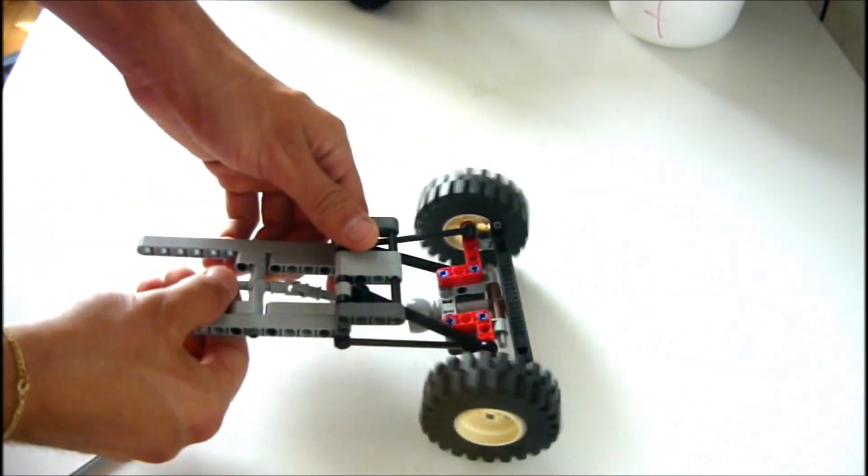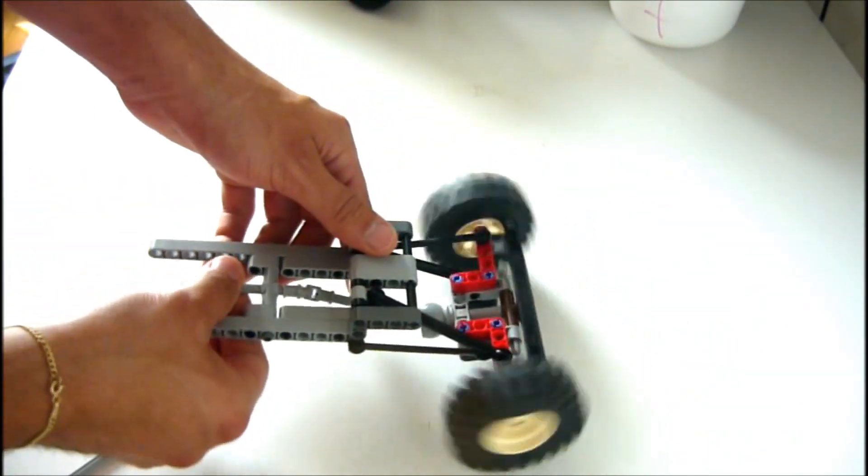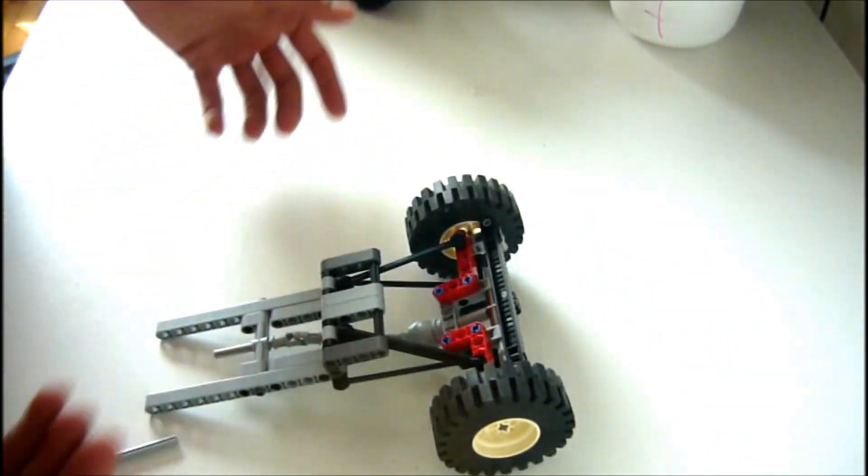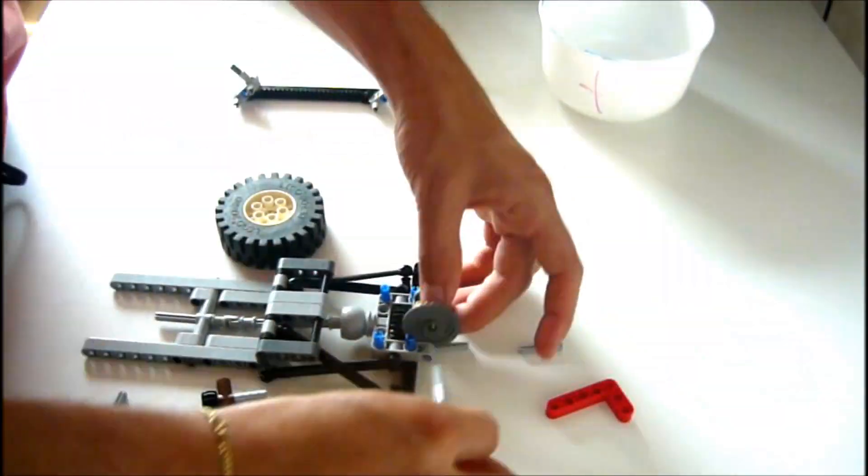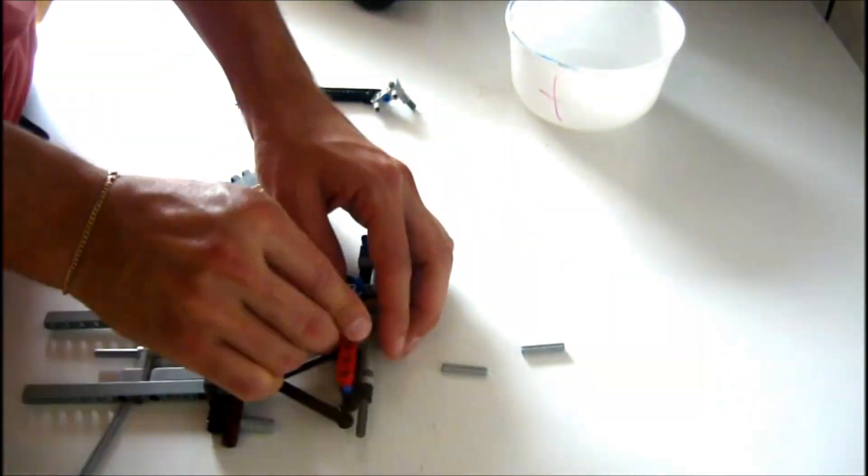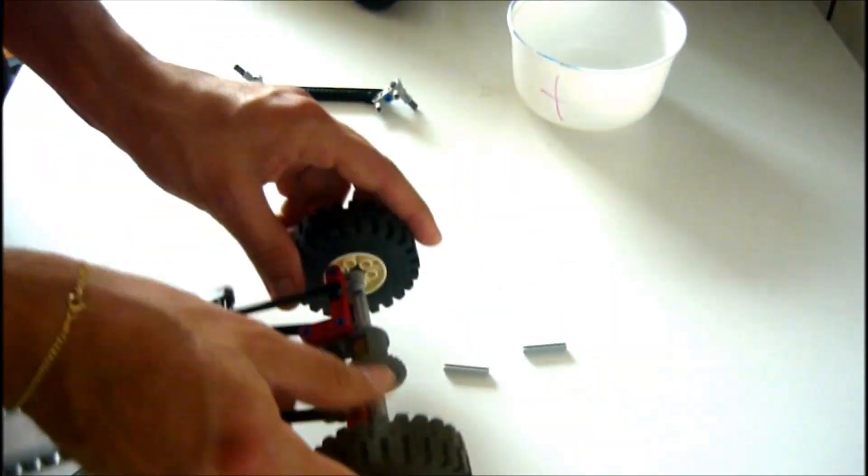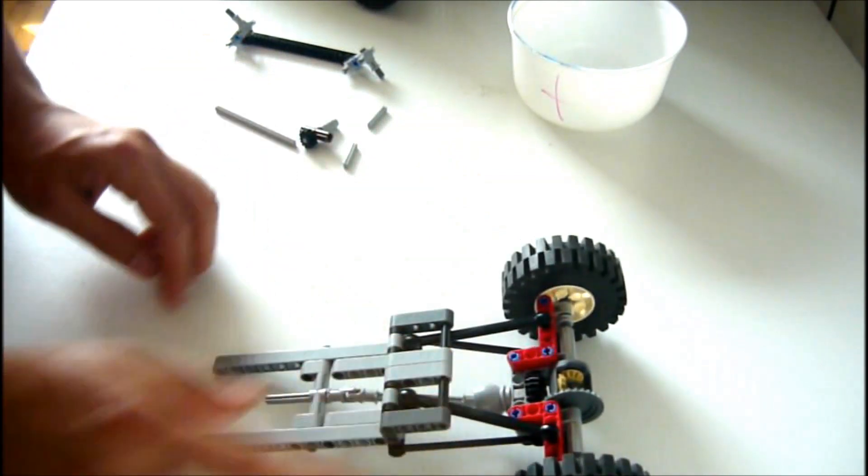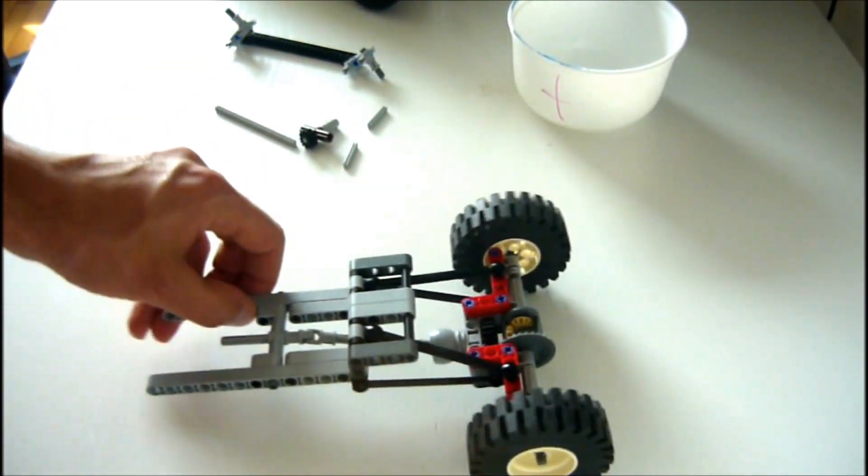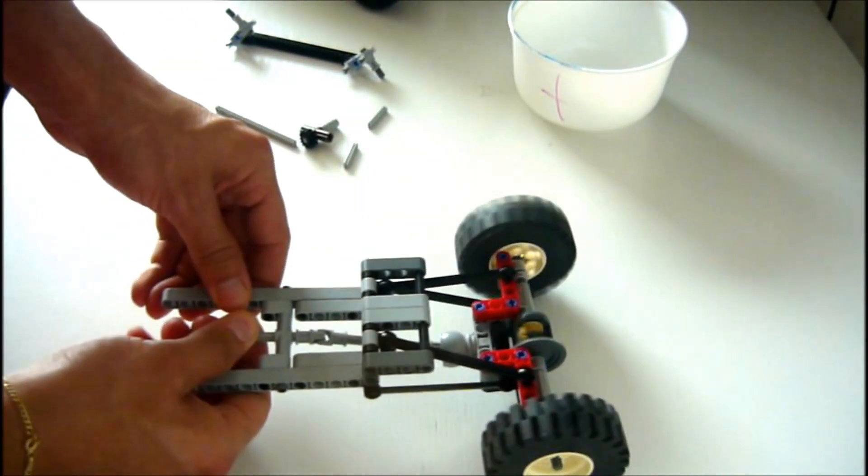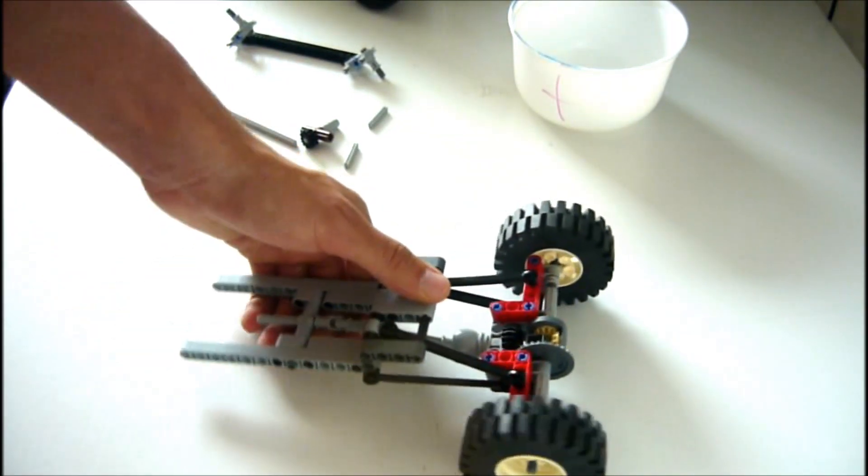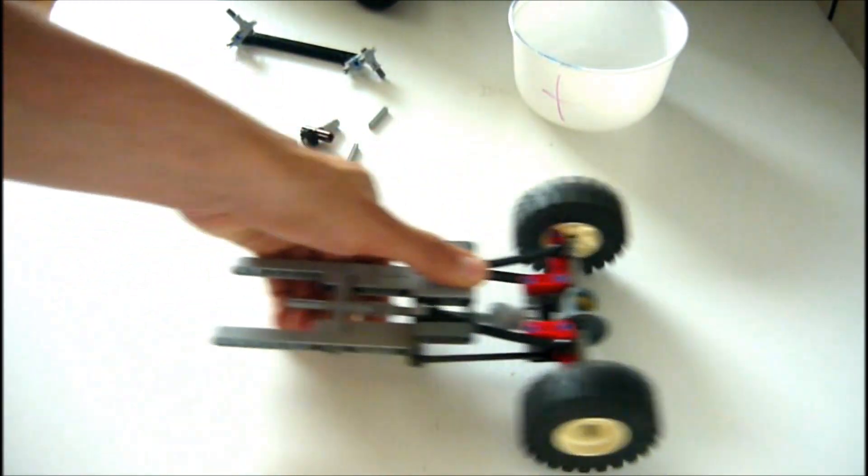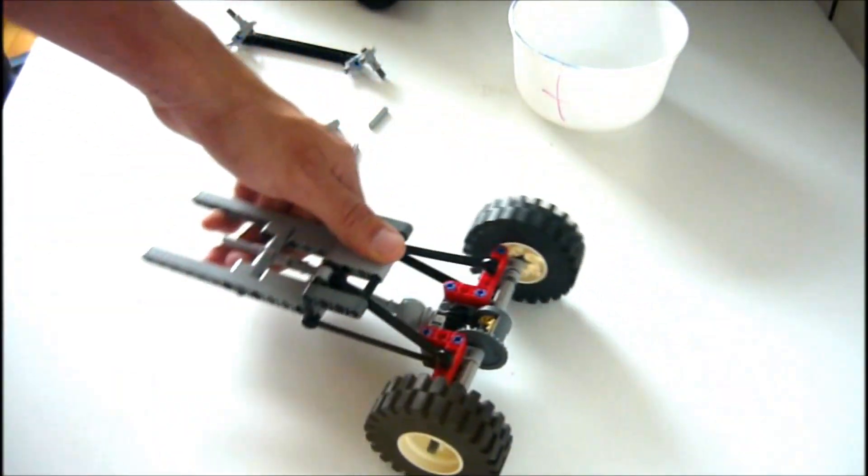Now in this case I'm showing you a steered axle, but you can really easily make a driven axle. It's as simple as this, so now you have your driven axle. And you can also make of course a driven and steered axle, but then you need a bit more parts.